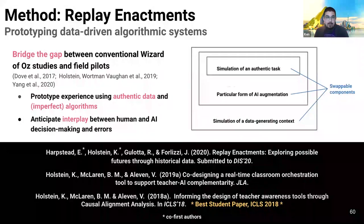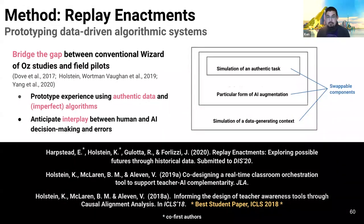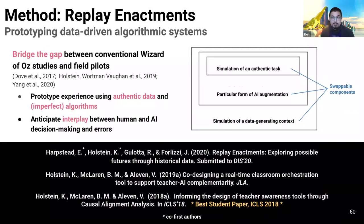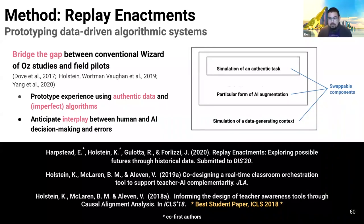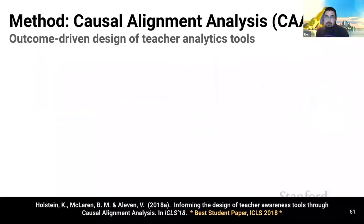Replay enactments embed participants in immersive simulations based on replays of actual data from field contexts, in order to help make the consequences of particular algorithm design decisions more tangible to stakeholders, even if they know very little about AI. During a session, a human wizard makes live changes to algorithmic elements of a system's design — for example, the parameters of a machine learning model — based on stakeholder feedback. This allows stakeholders to experience the consequences of their requested changes and then to rapidly iterate. In the Lumilo project, teachers worked with the wizard in a school computer lab, experiencing a simulated class session from historical data while wearing Lumilo and moving throughout the lab space.